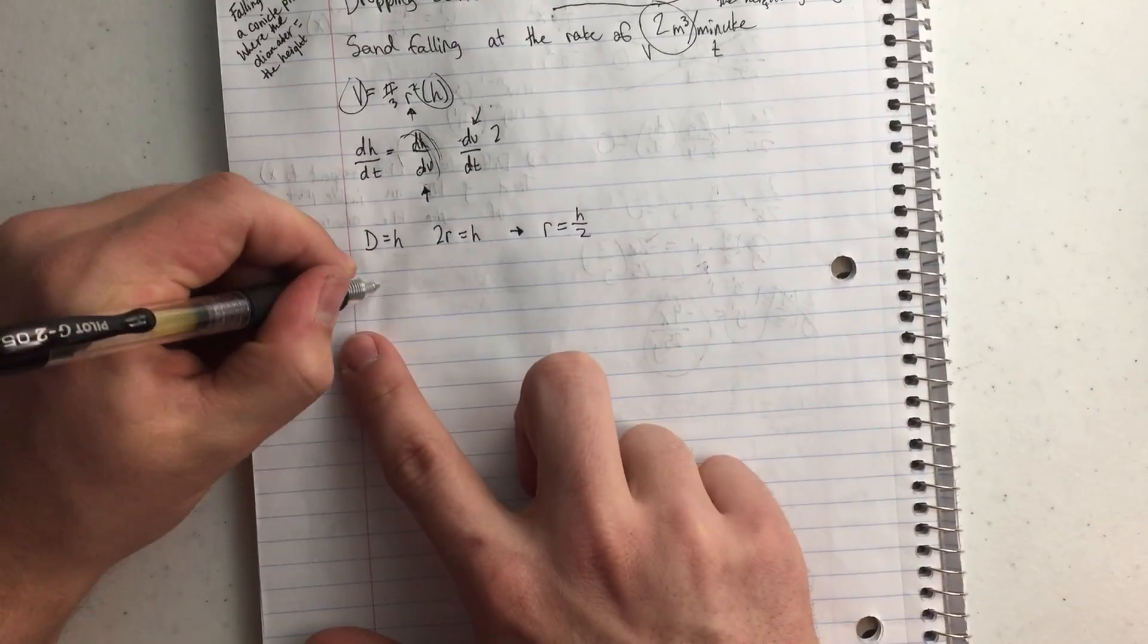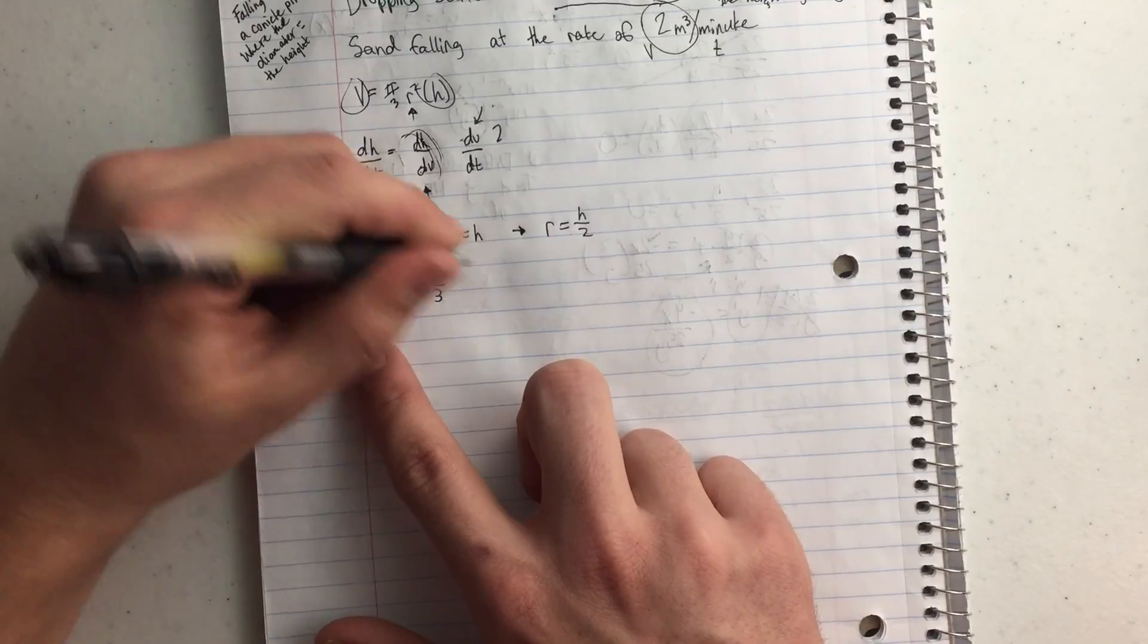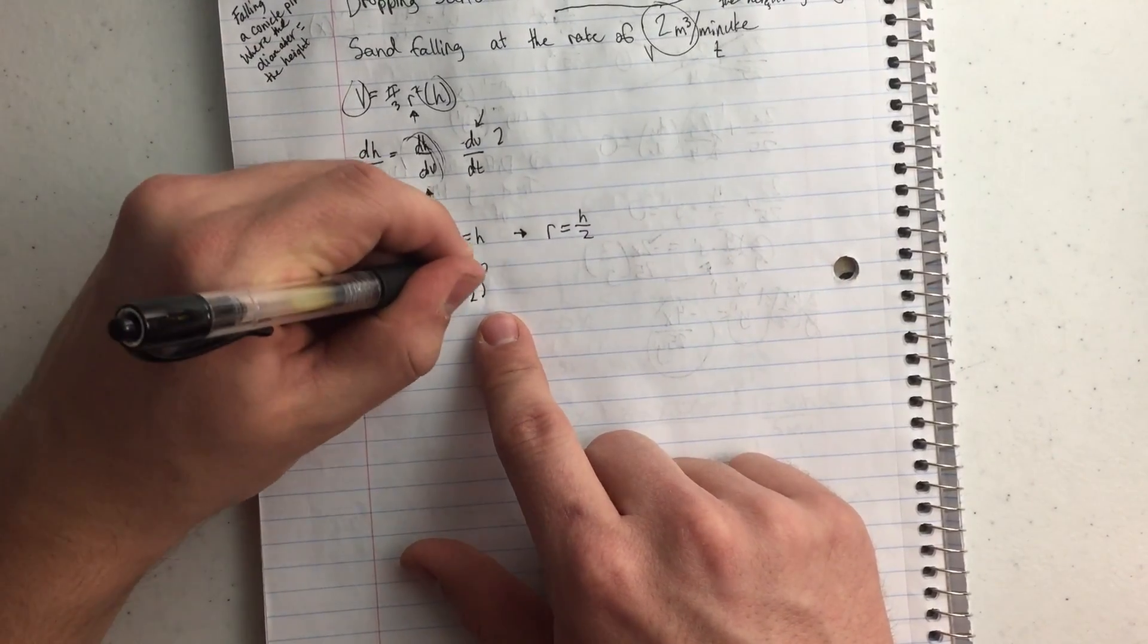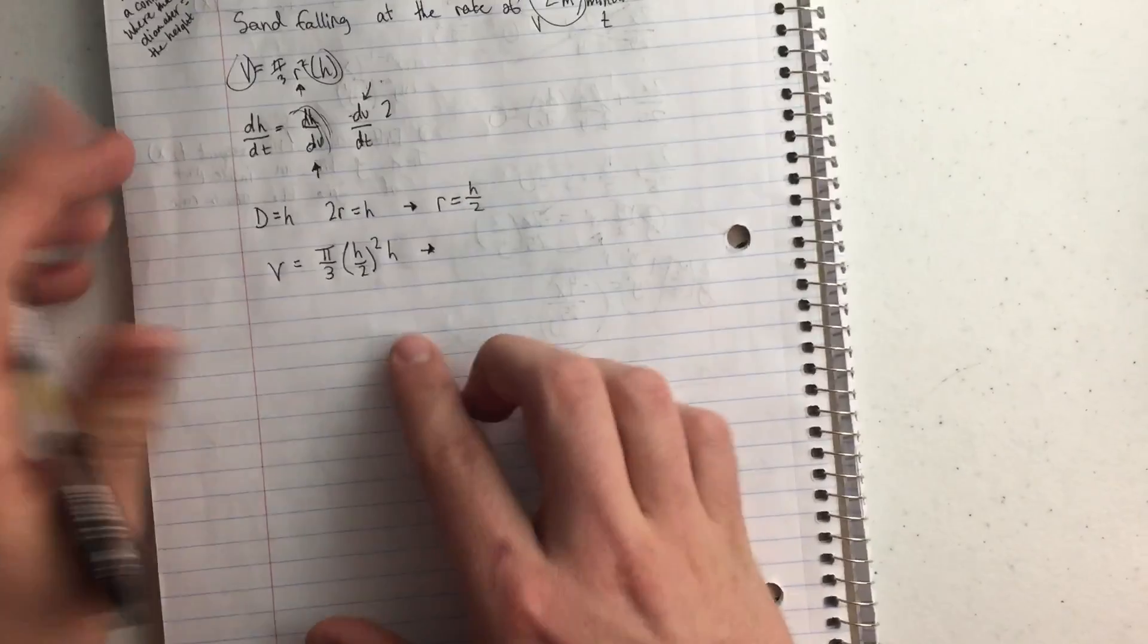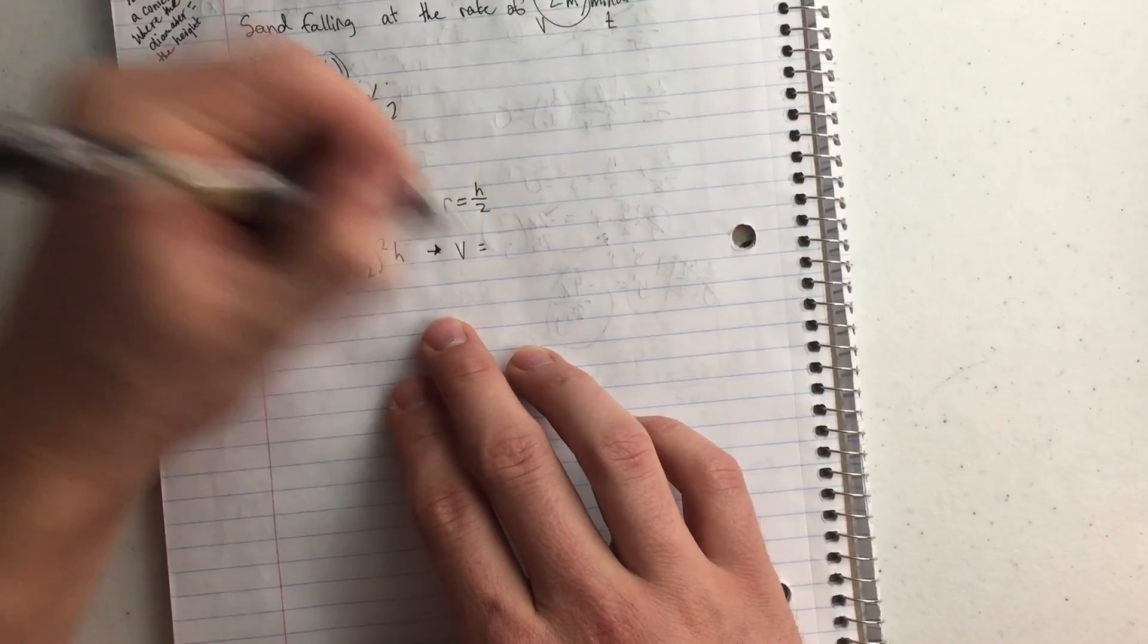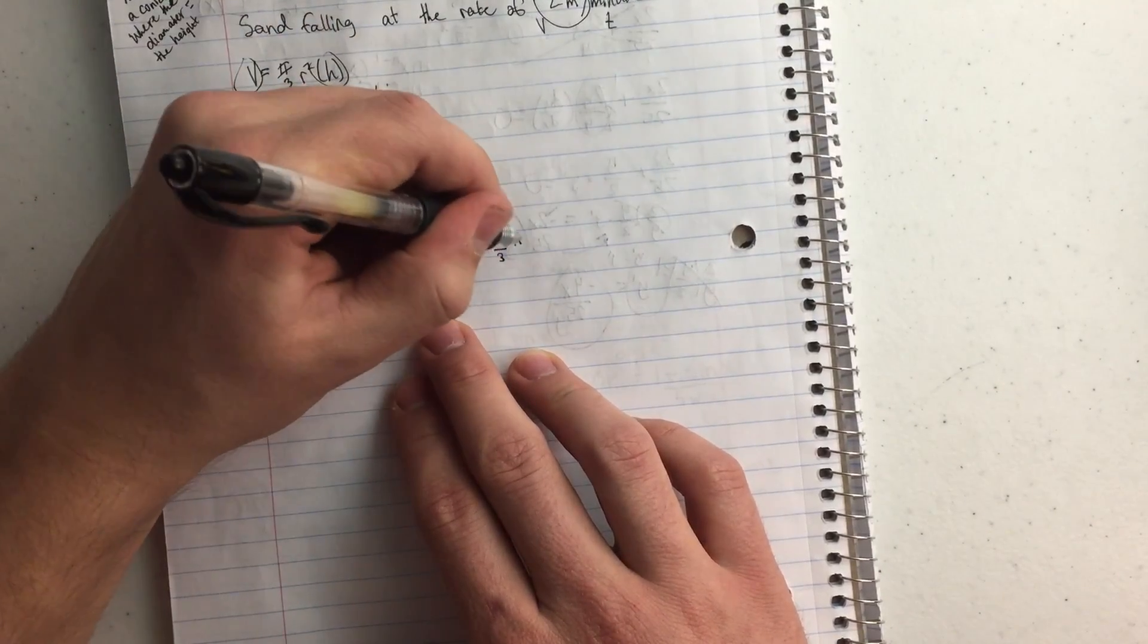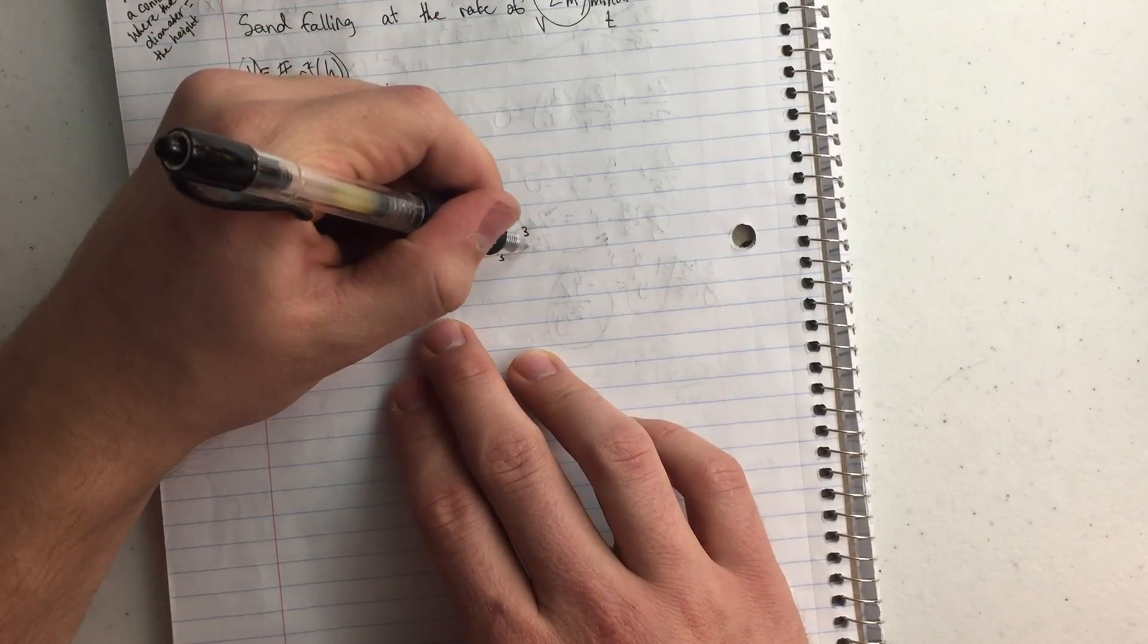Now I'm going to plug it in. So I have my volume equals pi over 3 times r, which is h over 2 squared times h. So now I'm going to multiply this out here. And so my volume is going to equal pi over 3 times h cubed over 4.